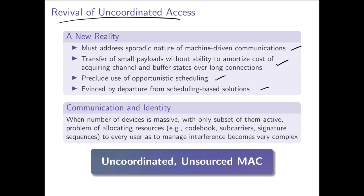A final point that comes into consideration in this tutorial is related to communication and identity. When the number of wirelessly enabled devices within a certain area is vast, with only a few of them being active at any point in time and for a short period, the challenge of identifying the devices and allocating resources must be taken into consideration. It cannot simply be swept under the rug as being amortized over long connections, since the connections are very small. Altogether, this leads to the rising interest in uncoordinated and unsourced schemes, and Krishna will give us some background on this particular view of wireless communications.